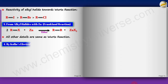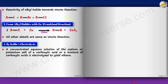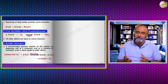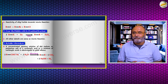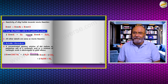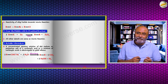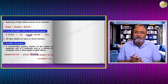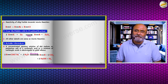Next is Kolbe's electrolysis. A concentrated aqueous solution of the sodium or potassium salt of a carboxylic acid is electrolyzed to yield an alkane. The overall reaction: RCOO⁻Na⁺ + H₂O → R–R + CO₂ + NaOH + H₂. As with the Wurtz reaction, using two different carboxylate ions gives a mixture of products, so the same carboxylate ion should be used for best yield of a single symmetrical alkane.